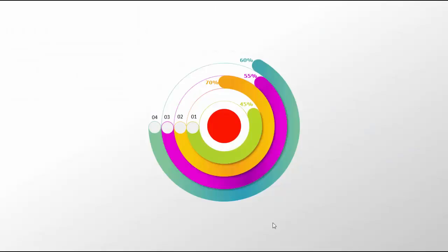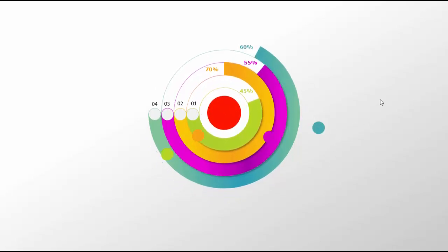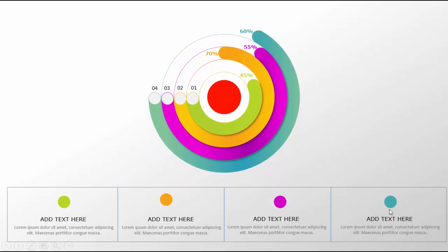In this tutorial I'm going to show you a very creative and unique circular chart in PowerPoint. I have four circular options — green, one, two, three, and four — showing percentages like 45%, 70%, 55%, and 60%. When I click using the morph transition, it shows the legend at the bottom explaining what each color — green, purple, orange, or teal — means. It's a very unique and interesting slide to make.